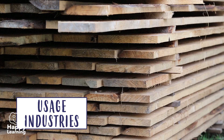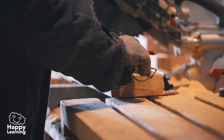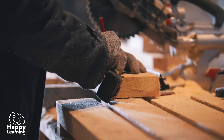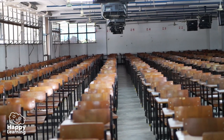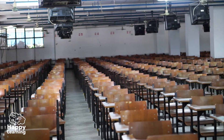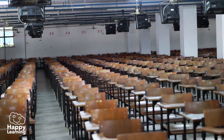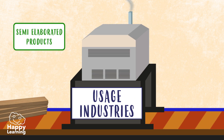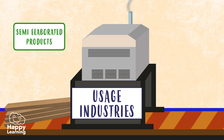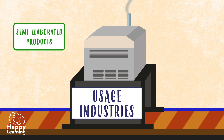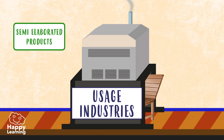Usage industries transform semi-elaborated products into products which are directly sold to people. For example, the chairs which are made with wooden boards from trees.